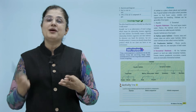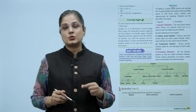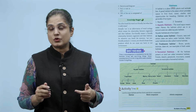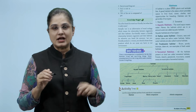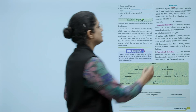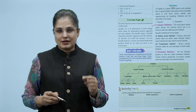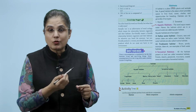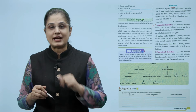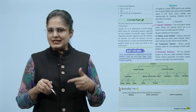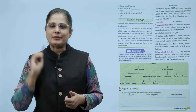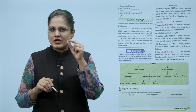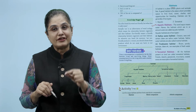A habitat is a place where plants and animals live. A good habitat is a place which provides space to find food, water, shelter, and opportunities for breeding. Habitats are generally of two types: aquatic and terrestrial. The word aqua means water, so habitats in or around water are called aquatic habitats, and these are of two types. First is the saline water habitat - oceans, seas, and certain lakes are saline water habitats, also called marine habitats. Next come the freshwater habitats - rivers, ponds, swamps, and lakes are examples of freshwater habitats.